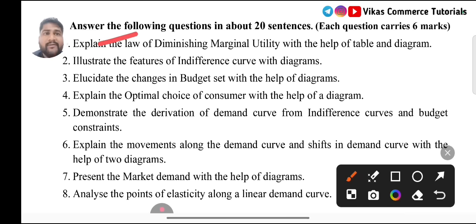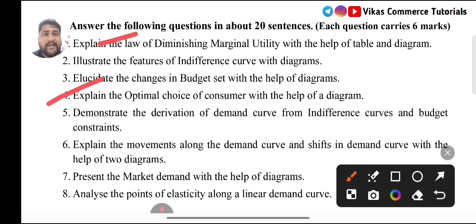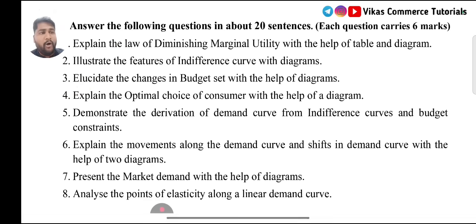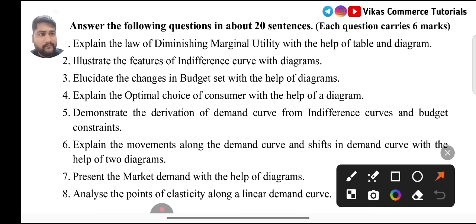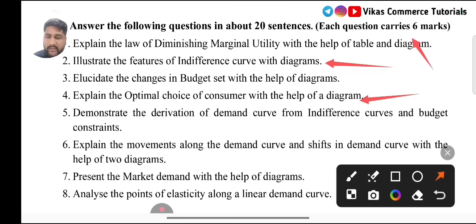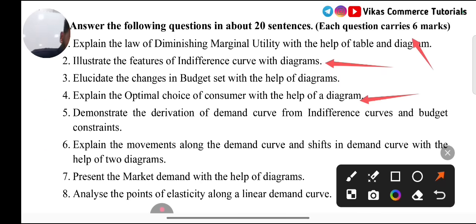Because this is a 20 marks chapter, another important question is Question 4: explain the optimal choice of consumer with the help of a diagram. So the three important questions are Question 1 (Law of Diminishing Marginal Utility), Question 2 (features of indifference curve), and Question 4 (optimal choice of consumer). These have appeared in model question papers as well as last year's question paper. These are the 6 marks important questions from this chapter.